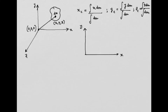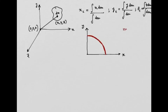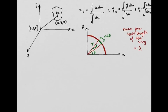In this question only x and y coordinates are relevant, and this is a quarter ring. We define the mass per unit length of the ring as lambda. The elemental mass is taken at angle theta with angular width d theta, so the length of the elemental arc is r d theta. Therefore the mass of the elemental arc is lambda r d theta.